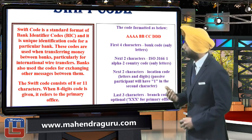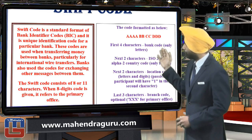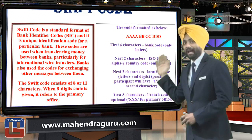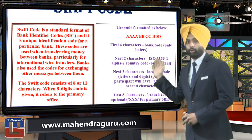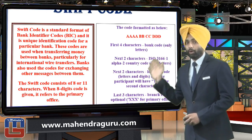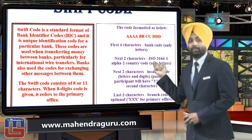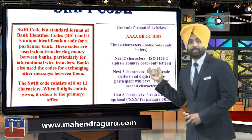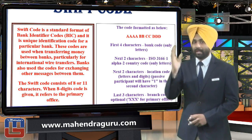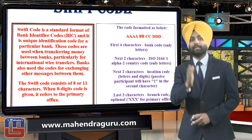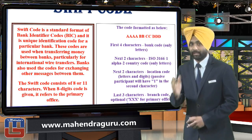Jab hum baat karte hai Swift code ki, toh yahaan hamare paas ek aisa code aata hai. Agar aap log yahaan screen pe dekhe — we have the text written out in purple — yahaan ek code diya hua hai, aur yeh hai aapka Swift code, jo ki red mein yahaan highlighted hai. Kitne digit ka code hota hai? 8 or 11? The answer is both — 8 digit ka bhi aur 11 characters ka bhi.